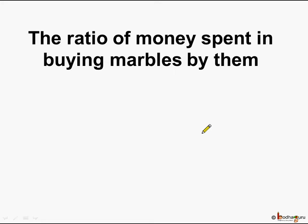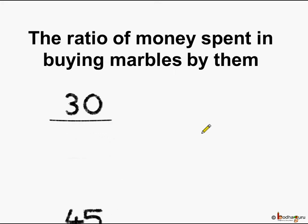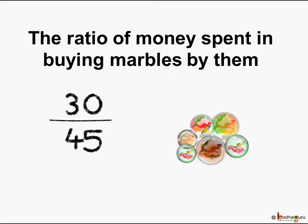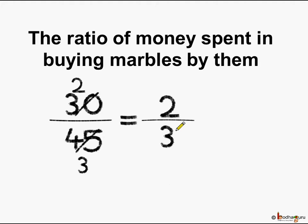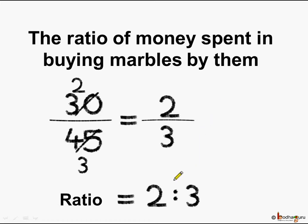The ratio of money spent in buying marbles by them is represented as the fraction 30 by 45. Let us reduce it to the lowest term. 15 twos are 30 and 15 threes are 45, so this fraction is reduced to its simplest form as 2 by 3. We can say the ratio of money spent is equal to 2 is to 3.